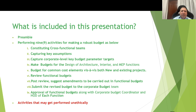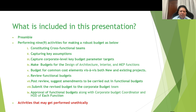This will cover introduction or preamble and performing nine activities for making a robust budget, such as: constitution of a cross-functional team; capturing the key assumptions; capturing the corporate level key budget parameters, that is targets; making budgets for the design of architecture, interior, and MVP functions; budget for the common cost elements; review functional budgets; post-review amendments to be carried out in the functional budgets; submit the revised budget to the corporate budget team and approval along with the corporate budget coordinator and the HOD of each function; and activities that may get performed unethically. So these are the nine activities plus one additional point.